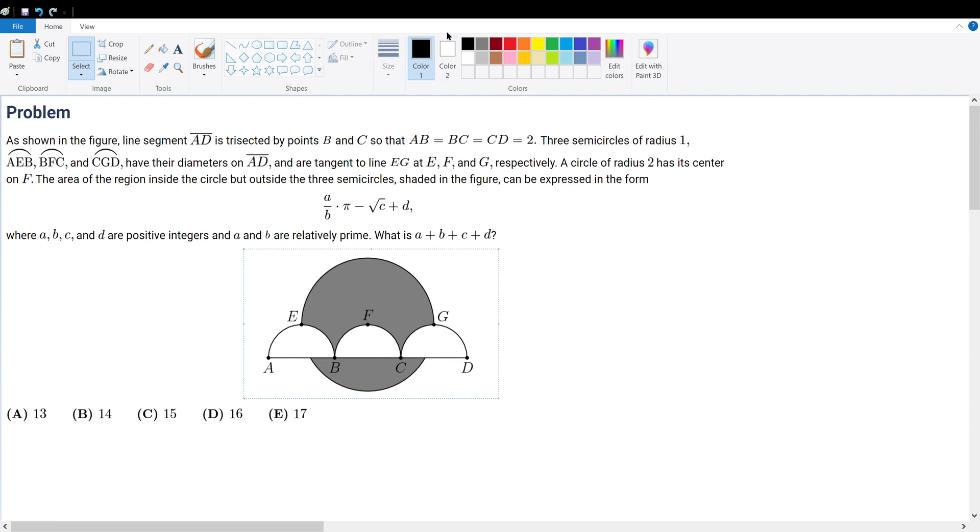We're also told that there's a circle with radius 2, and its center is on F. The area inside the region that's shaded, but outside of the three non-shaded circles, is expressed by the following expression, and we're trying to find the summation of A, B, C, and D.